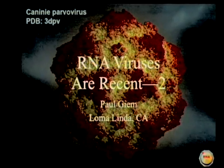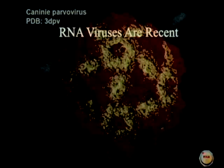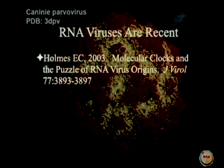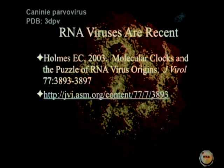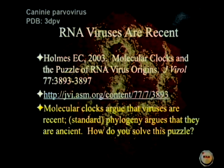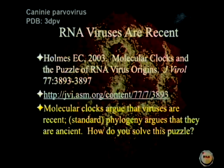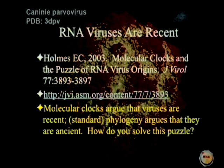RNA viruses are recent, part two. We were going over last week a paper by E.C. Holmes in the Journal of Biology called 'Molecular Clocks in the Puzzle of RNA Virus Origins.' It's available on the net. To summarize what it had to say: molecular clocks argue that viruses are recent, and standard phylogeny argues that they are ancient. The question is how do you solve this puzzle? We're going to see how Holmes solves it and more importantly, what kind of evidence we have behind the statements that Holmes makes.